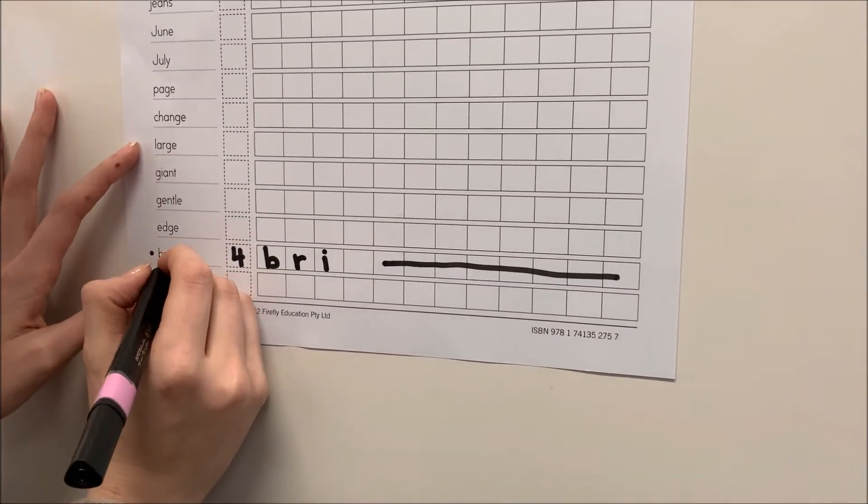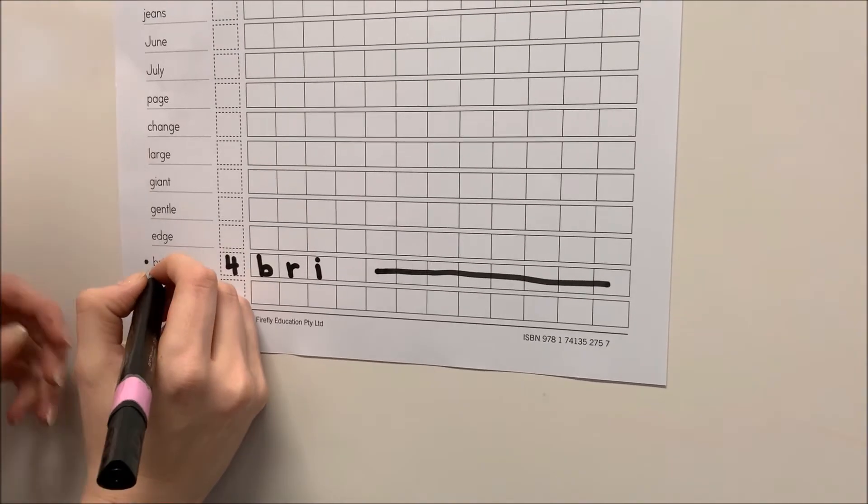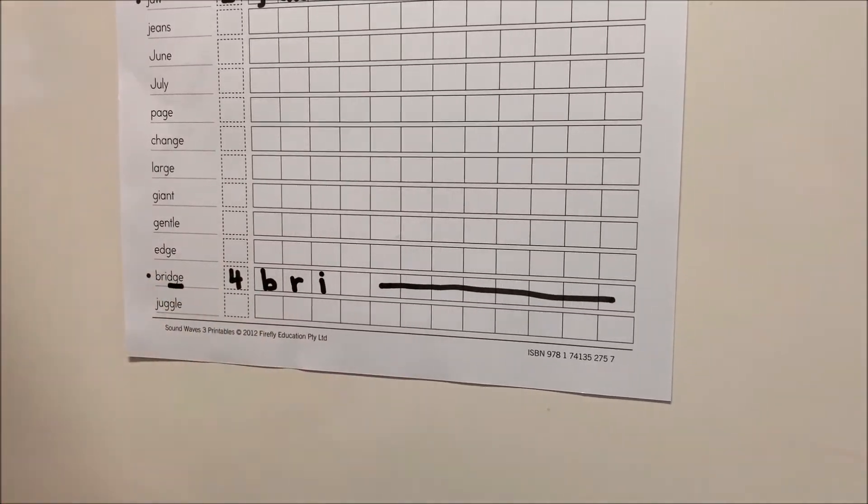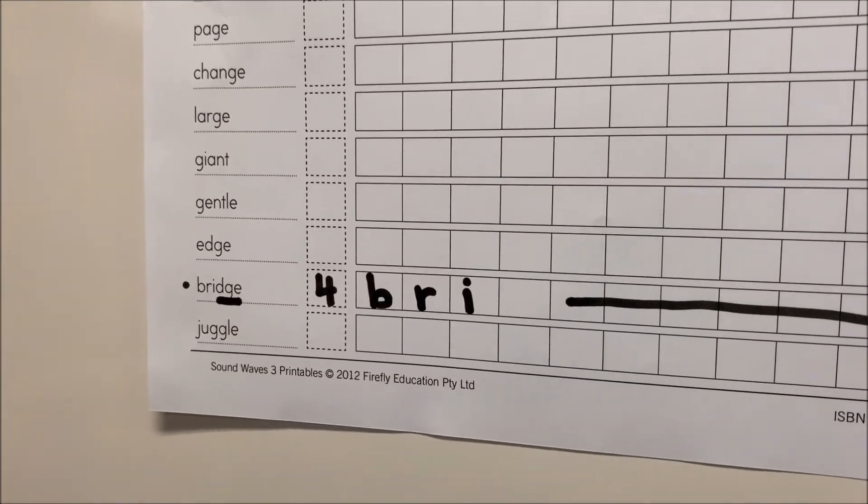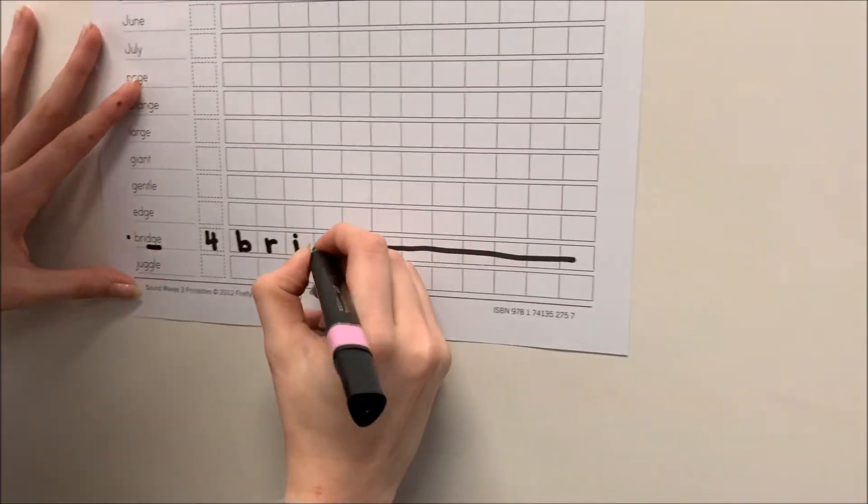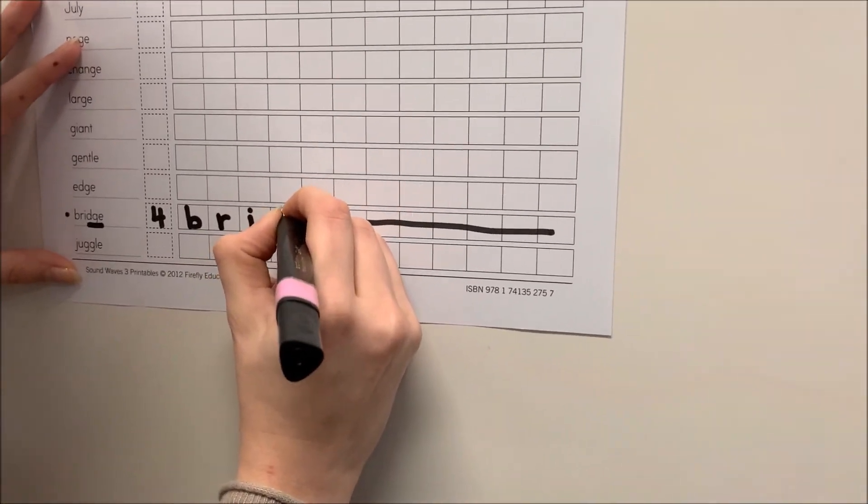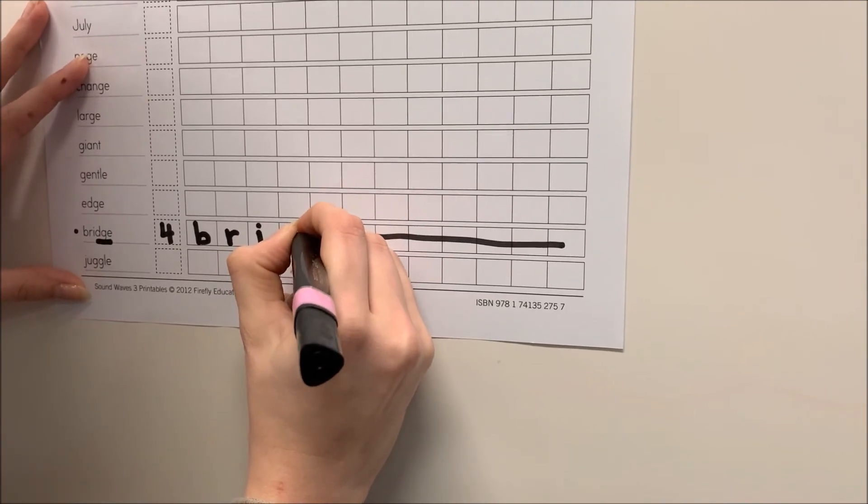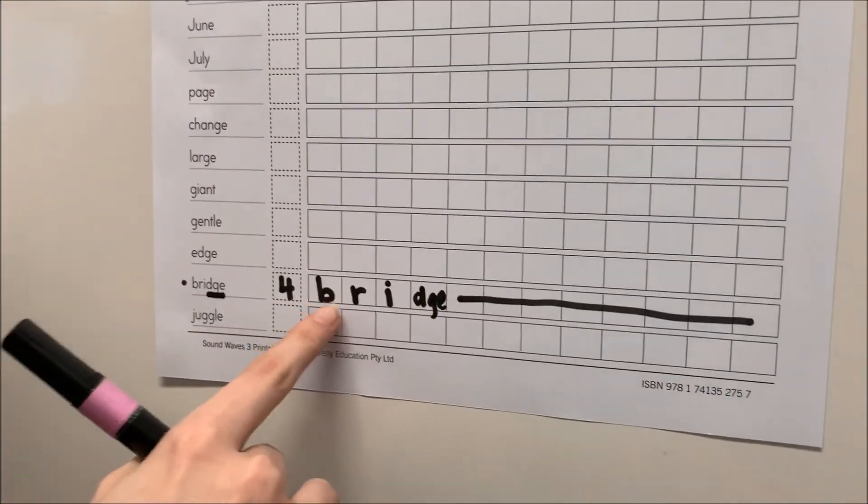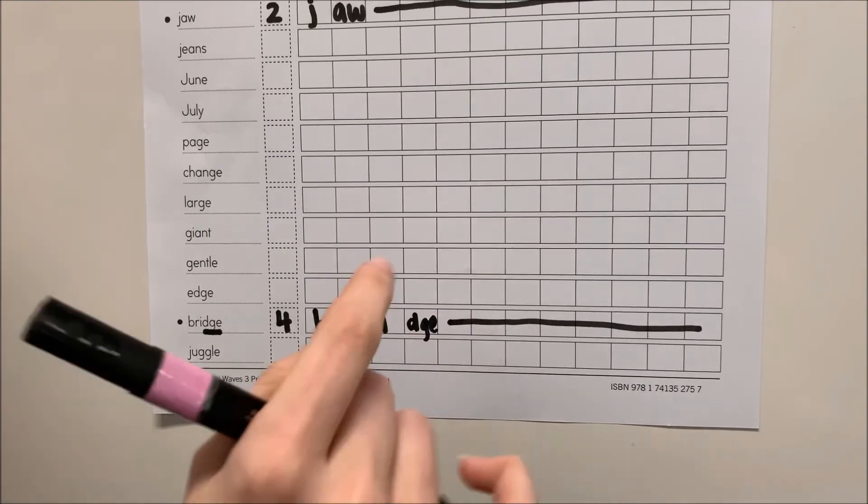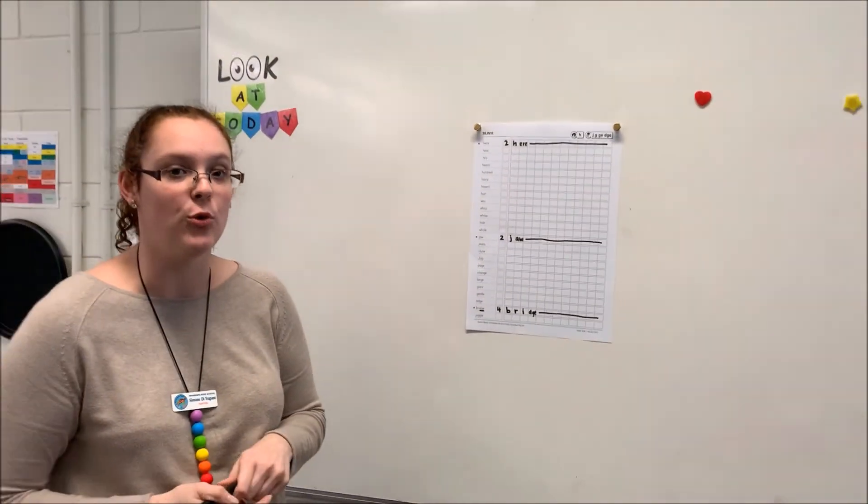I know here I've used the B, the R, and the I. I have three letters left, and they are all making our J sound, so that means they all need to go in one box together. And that is how we use our segmenting tool.